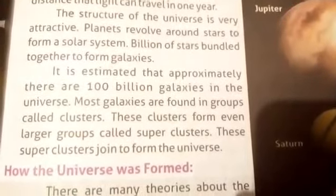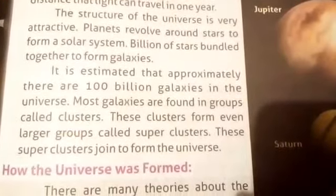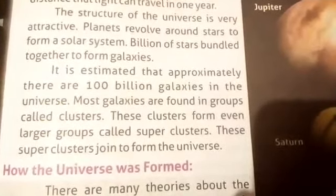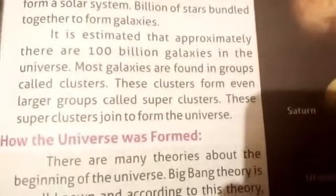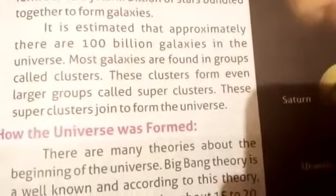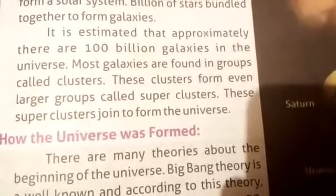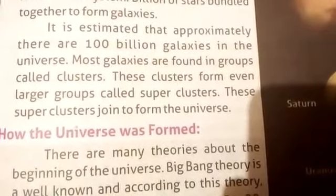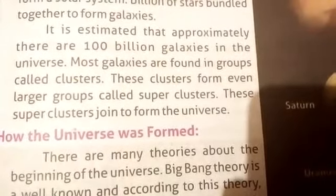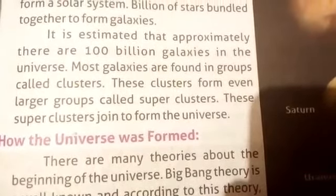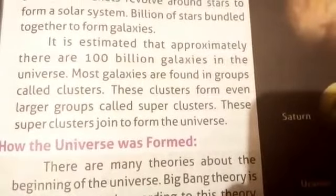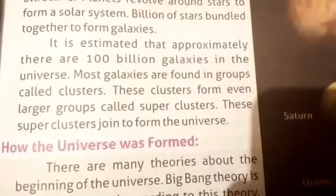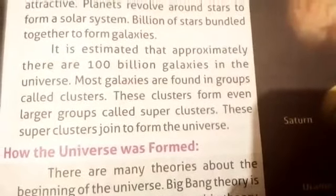It is estimated that approximately there are 100 billion galaxies in the universe. Most galaxies are found in groups called clusters. These clusters form even larger groups called superclusters. These superclusters join to form the universe.